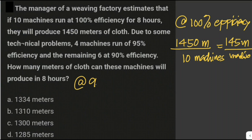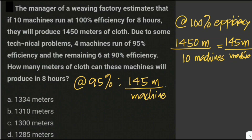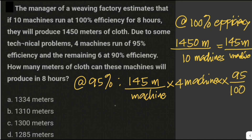For machines at 95% efficiency, we multiply the length of cloth produced per machine (145 meters) by 4 machines, times the percent efficiency, which is 95 over 100. So at 95% efficiency, the length of cloth produced is 551 meters.